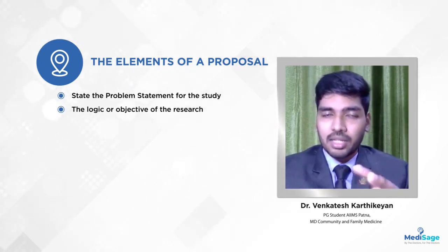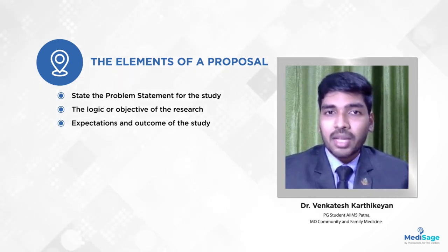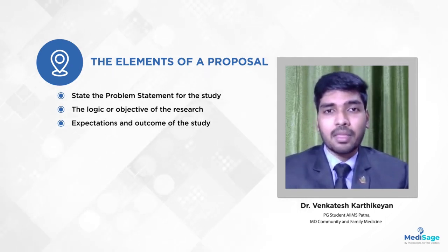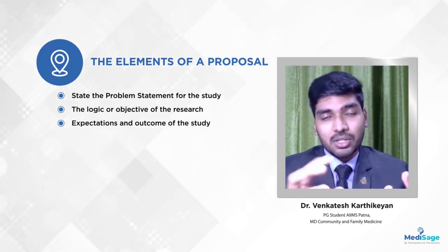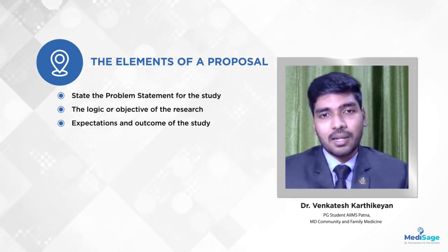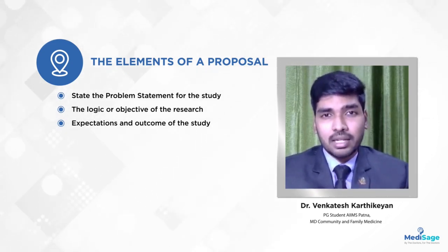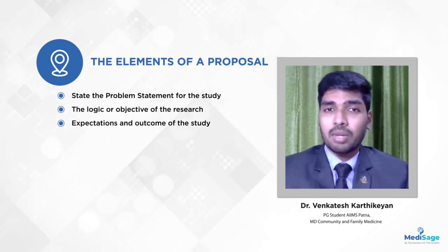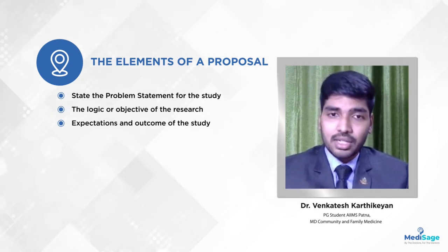The next thing to focus on is the expected outcome and application. For example, I am expecting that around 40% of people in Patna have diabetes — that is the outcome I am expecting. Once I get that outcome, how am I going to apply it? I will direct medical officers to start screening for diabetes and initiate treatment early. Those kinds of expected outcomes and their applications should be mentioned clearly.